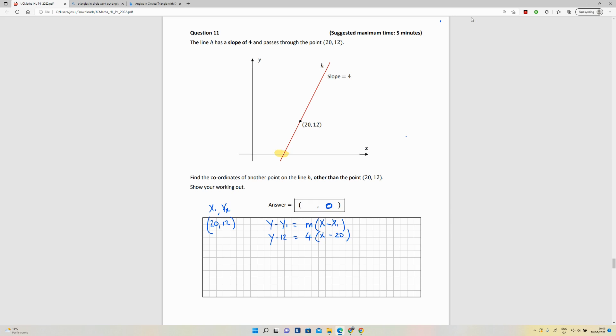Okay, so y minus 12 is equal to 4x minus 80. So if I bring across, if I add 12 to this, this is going to be y equals 4x minus 68.